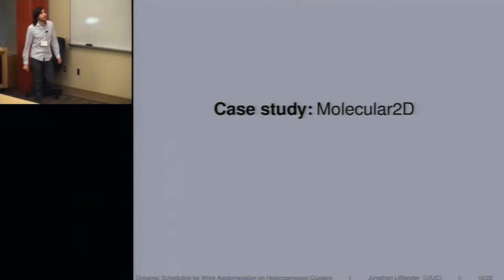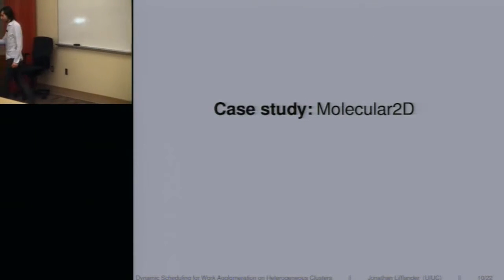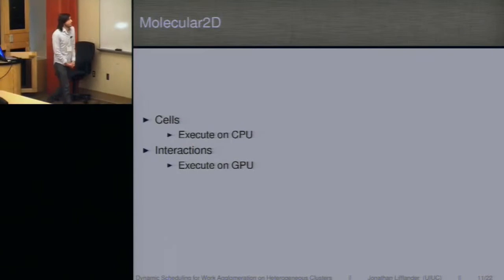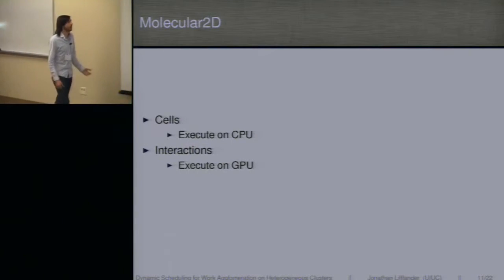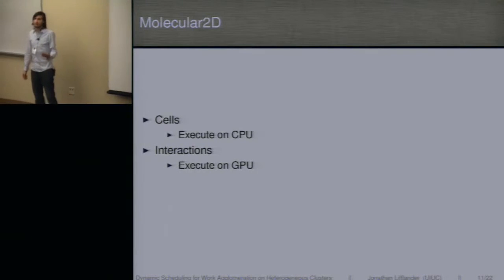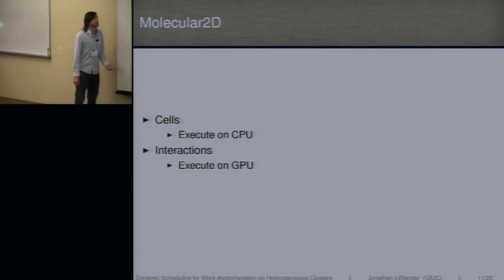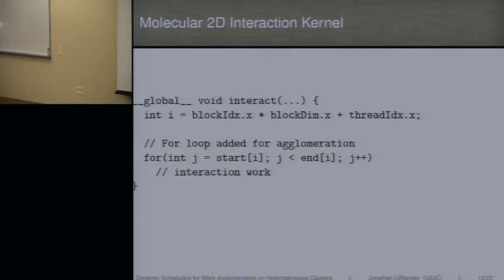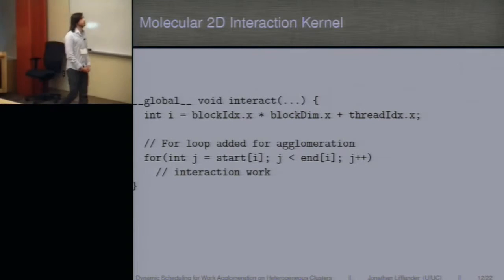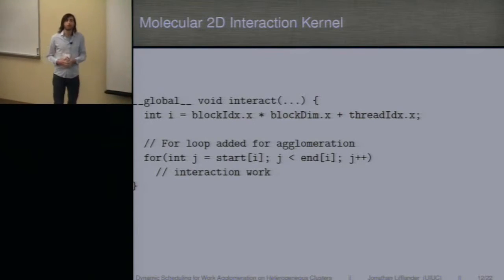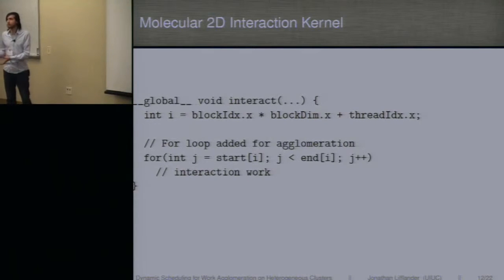So first case study I'll look at is molecular 2D, which is a simplified MD interaction with cutoff in two dimensions. We have cells that we execute on the CPU. To study agglomeration explicitly, we map all the interactions to the GPU. This is the interaction kernel. Just to show the overhead we have to add when you're writing the kernel for a very simple kernel. We're not GPU experts, or at least I'm not. So we didn't write highly tuned kernels that use texture memory. Instead, we just used the regular memory.